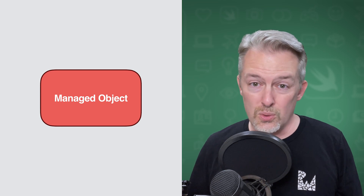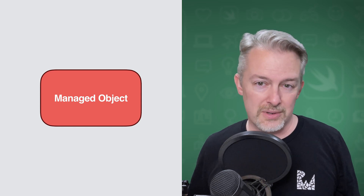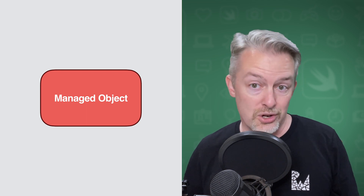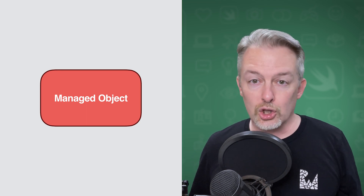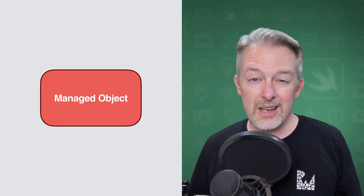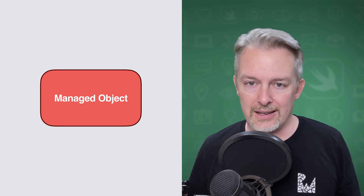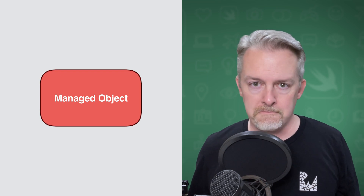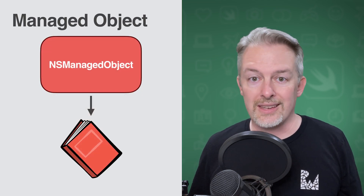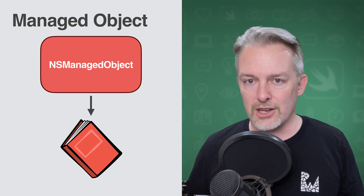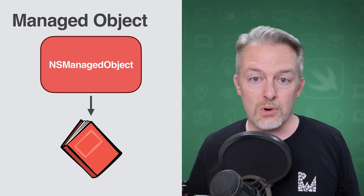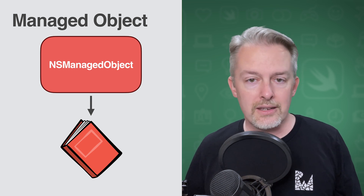With Core Data, you don't use plain Swift types to model your data. Instead, you use a managed object. A managed object looks and feels like a Swift class, but you should think of it more as a representation of the data held in the persistent store. Instead of being a specific type, a managed object is a subclass of NSManagedObject and is more like a generic container that we can store our data in, much like a dictionary.